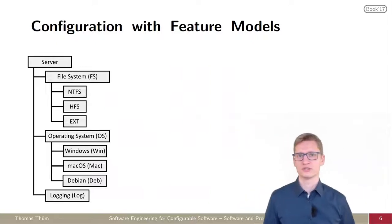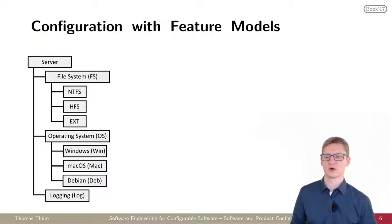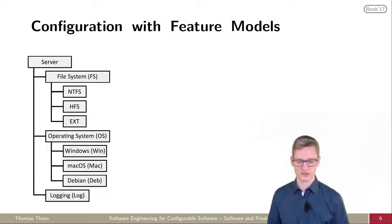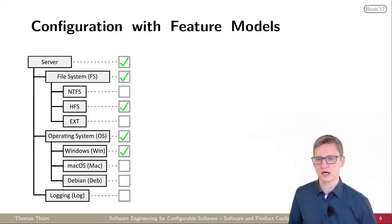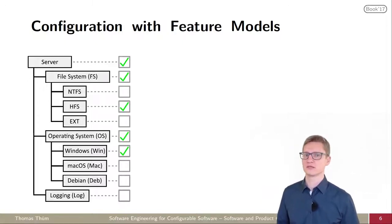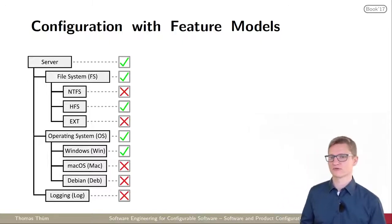To look a bit more into detail, what the tool does: I have a small example here. The example is a small server. The server has a file system, it has an operating system, and it might have logging or not. What happens now is when you do configuration, basically you do a selection of what you need. Everything that you haven't selected is basically what you don't need. That's a very basic assumption of configuration. You just make your choice, your favorite choice.